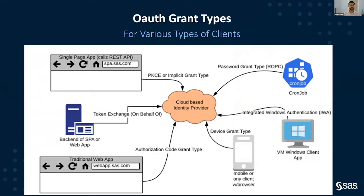One of the great things about OAuth and OpenID Connect is that it supports many different types of clients. In OAuth terminology you have OAuth grant types, which are used by these various types of clients. Using a cloud-based identity provider with the full OAuth/OpenID Connect spec implemented, you're going to be able to support lots of different client types including mobile devices, integrated Windows authentication, and even Internet of Things scenarios.